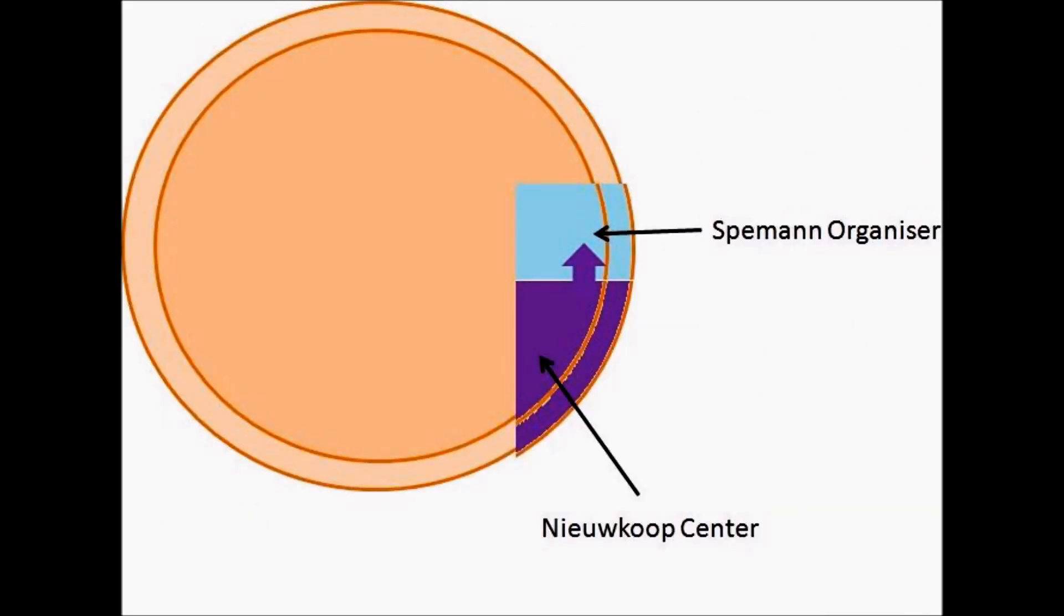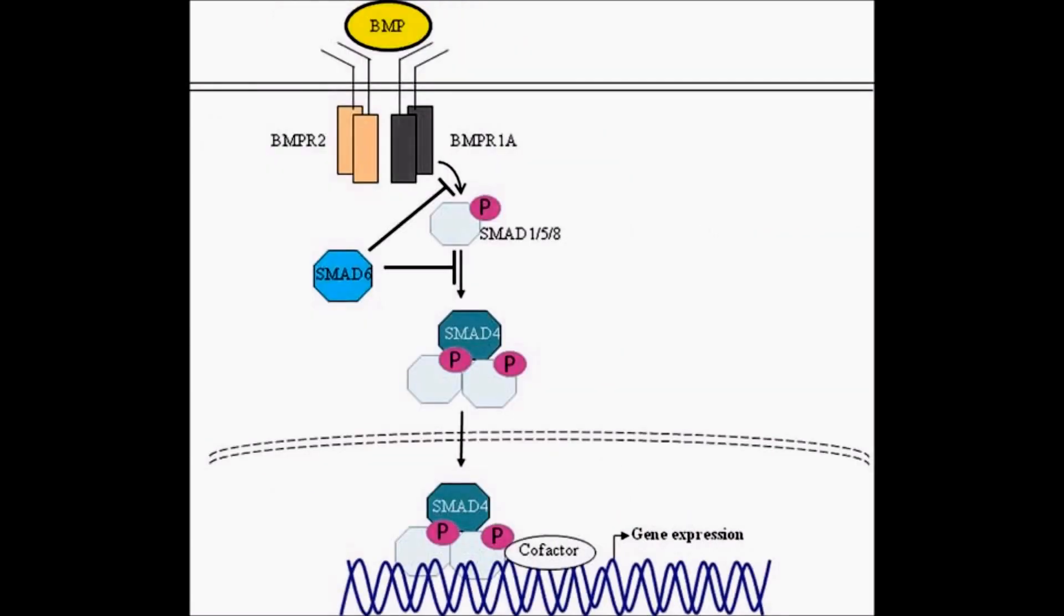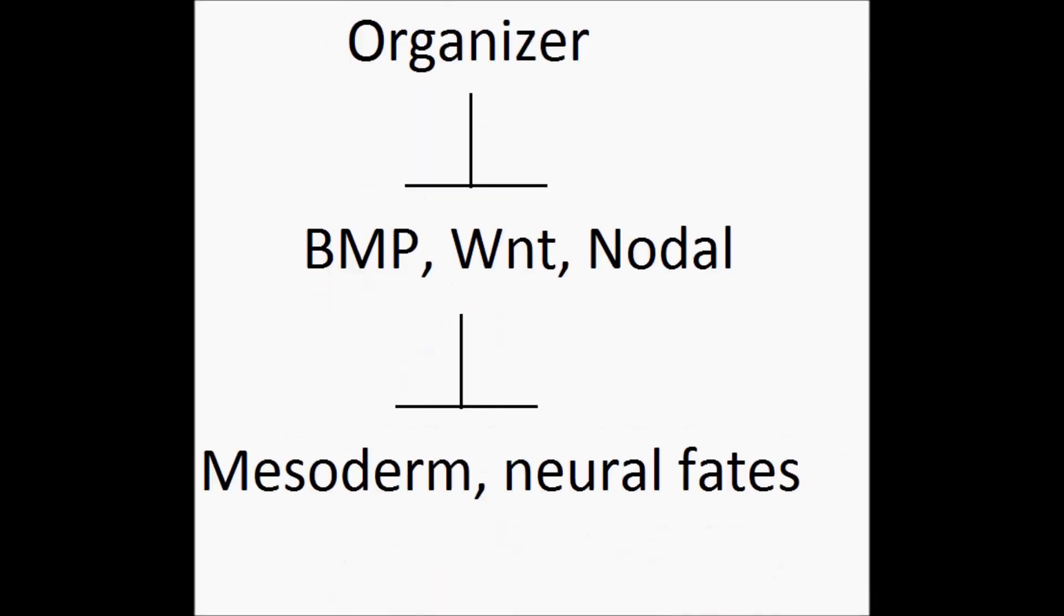The organizer is essential for setting up the body axis. The organizer is a signaling center. It blocks BMP and Wnts. BMPs are TGF-beta proteins that block mesoderm and neural fates. The organizer will inhibit the inhibitor, resulting in mesoderm and neural fates.